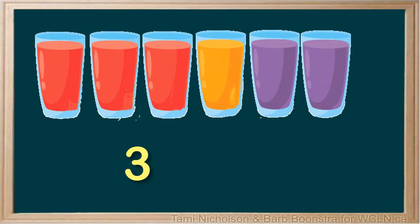Then comes the orange juice — one — and the last is the grape juice — two. The unit for the three ingredients is the same: glasses. The ratio would be 3 to 1 to 2.